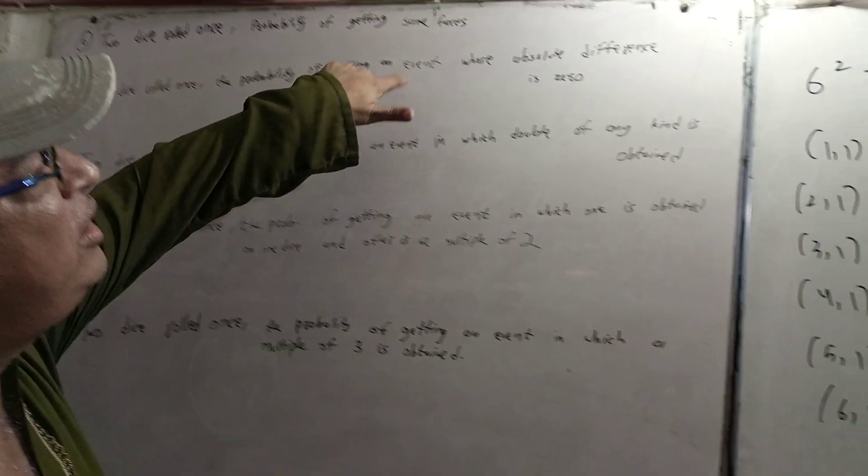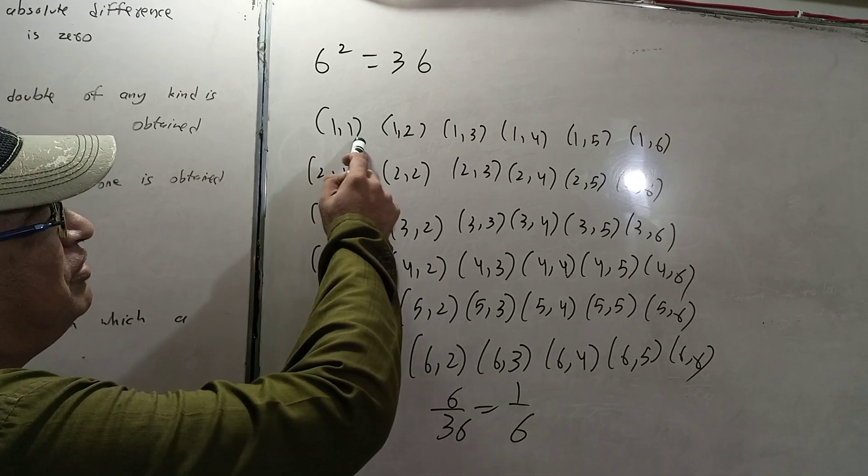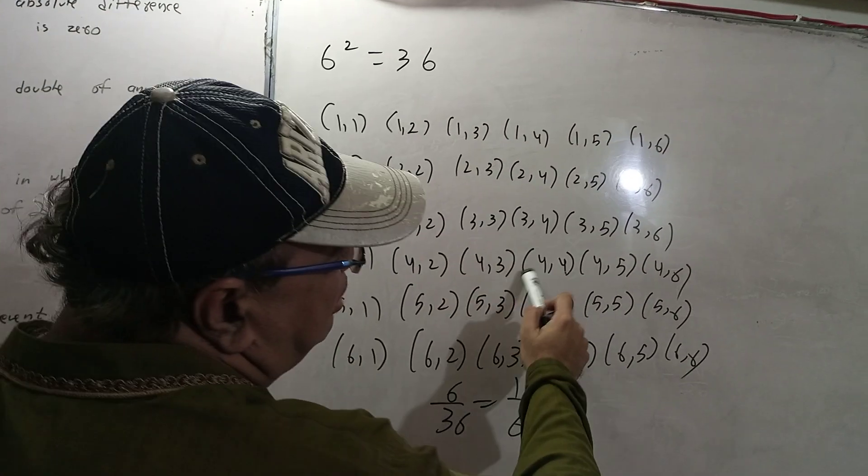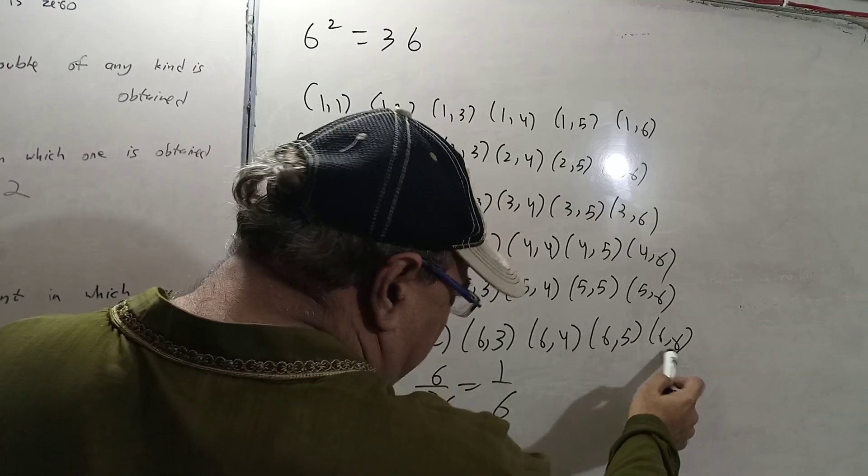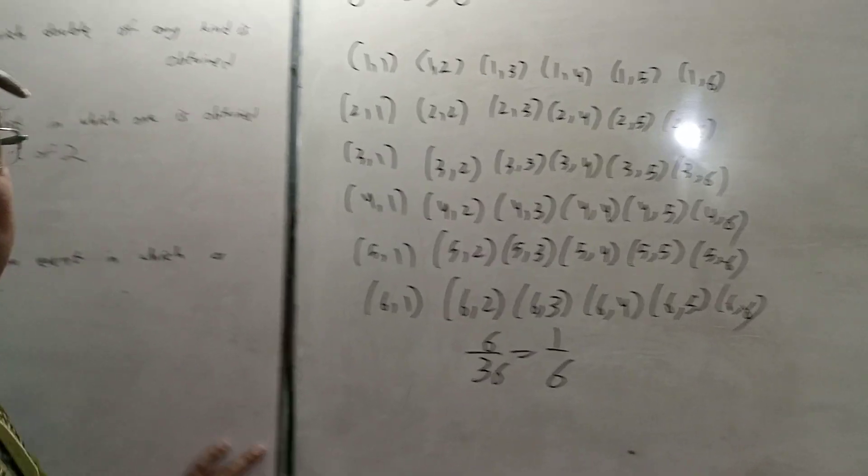Two dice rolls, probability of getting an event whose absolute difference is 0. Absolute difference is 0 means the same faces again: (1,1) through (6,6). The answer is 6 upon 36, which simplifies to 1 by 6.